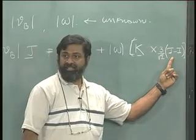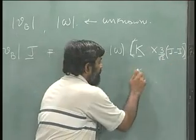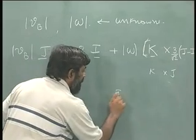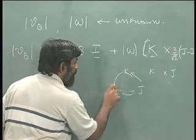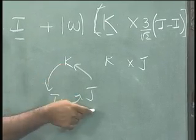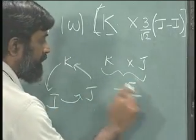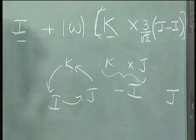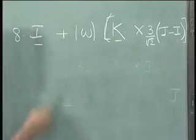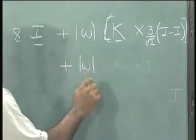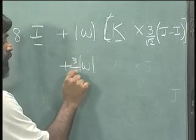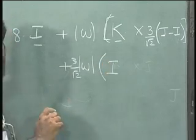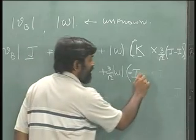What is K cross J? K cross J will come in here and that will be nothing but, how do I find out? I, J, K. If it is in the cyclic order, I will get a positive when I do a cross product. So K cross J will be a minus I and I have a K cross I, K cross I is positive. So I will get a J. Therefore here I should be getting plus omega. I will take this out. So 3 by root 2 times K cross J is minus I minus J.